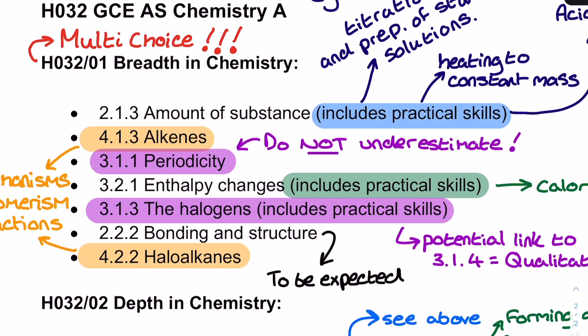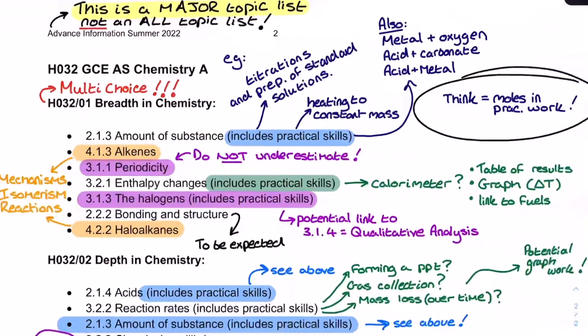So please make sure that you don't underestimate the multiple choice section of the breadth in chemistry, but also things like flow chart diagrams when it comes to organic chemistry from module four. Because the other thing I've noticed is there isn't a lot of module four presence in this list. But it's very easy to assess alcohols, haloalkanes, carboxylic acids in lots of small ways using a flow chart style exam question structure.